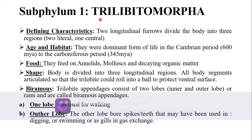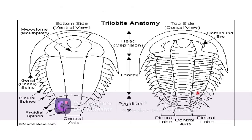The defining characteristic of Trilobitomorpha is that the body is divided into three regions. Two longitudinal furrows divide the body into three regions. This is the body of the trilobite — you can see these are the two longitudinal furrows, one here and the other here, dividing the body into three regions. This is why it is called Trilobitomorpha.